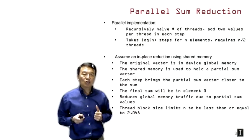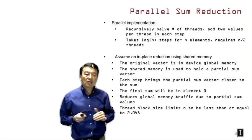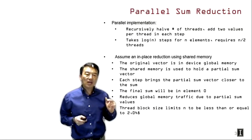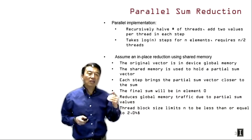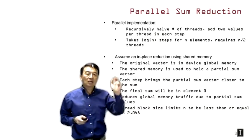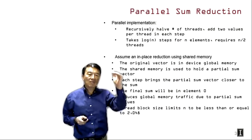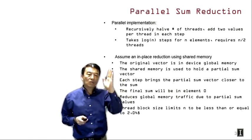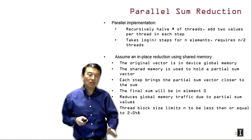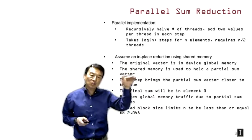Here is an outline of the parallel reduction kernel. We're going to start with a full set of threads in a thread block and then recursively halve the number of threads in each step. In every step, the active threads will be adding two values together. This will take log N steps for N elements. Some threads will be turned off, and some threads will take all the log N steps while others drop out earlier.